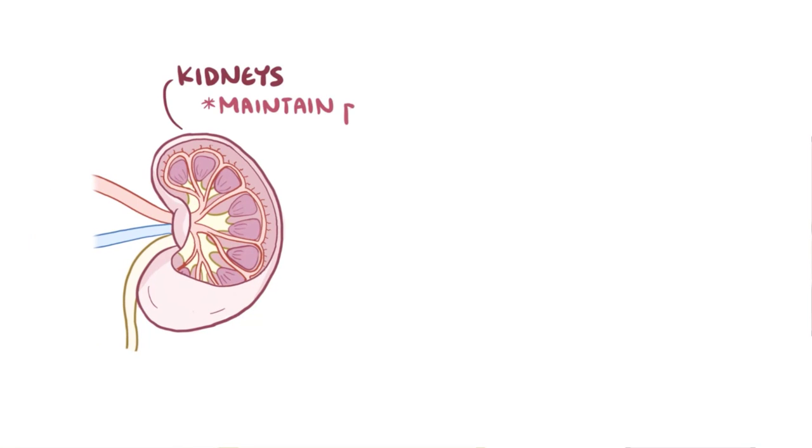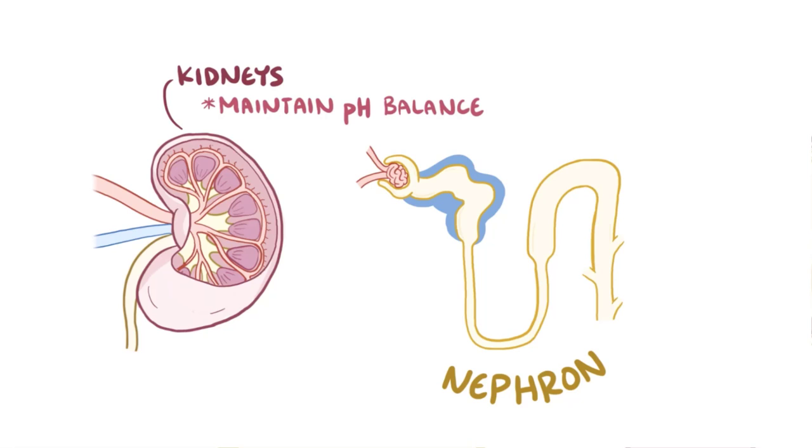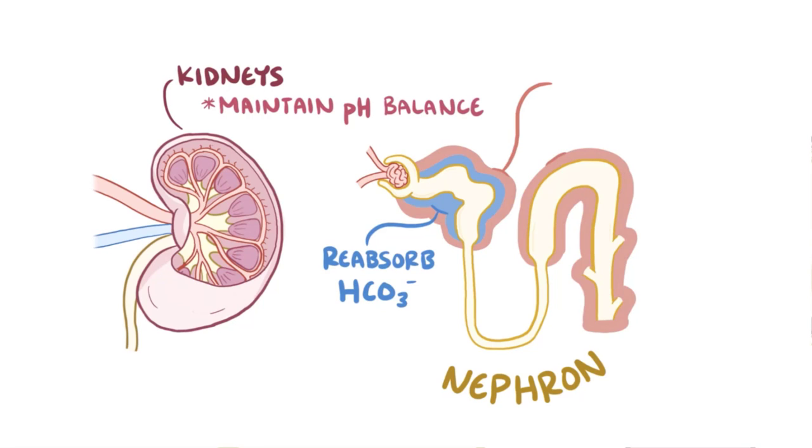As a quick recap, the kidneys help maintain pH balance of the blood. In the nephron, the proximal convoluted tubule cells are able to reabsorb the bicarbonate ions. And cells in the proximal, as well as the distal convoluted tubule and collecting ducts, secrete hydrogen ions that are carried out into the urine using the ammonia and phosphate buffer systems.